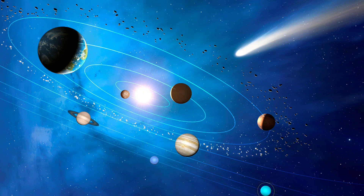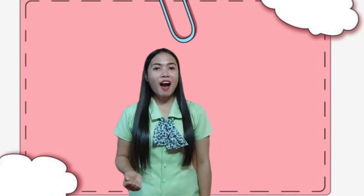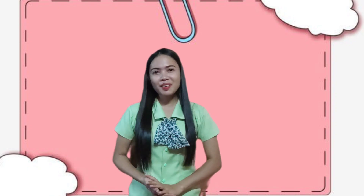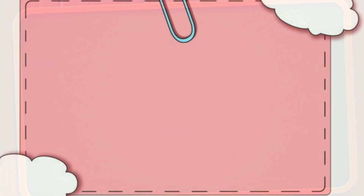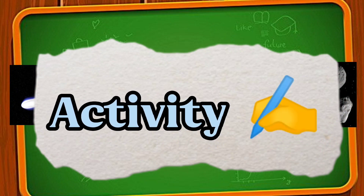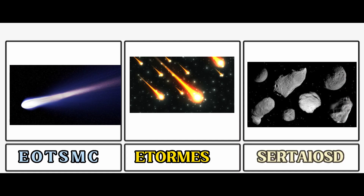Yes there is, and those are the other members of the solar system. Do you want to know the other members? Let's find them by having another activity. Examine the pictures in each box and then arrange the jumbled letters into the correct sequence to form the correct words. Your timer starts now.